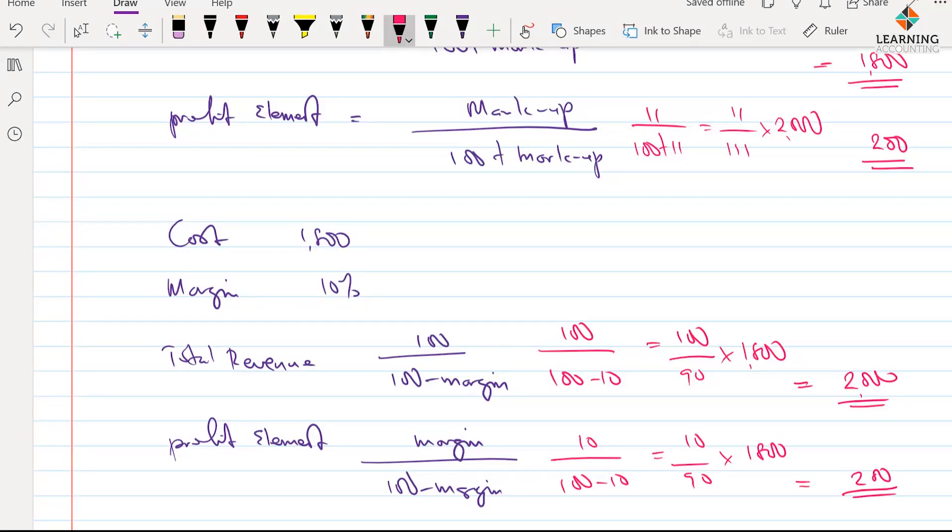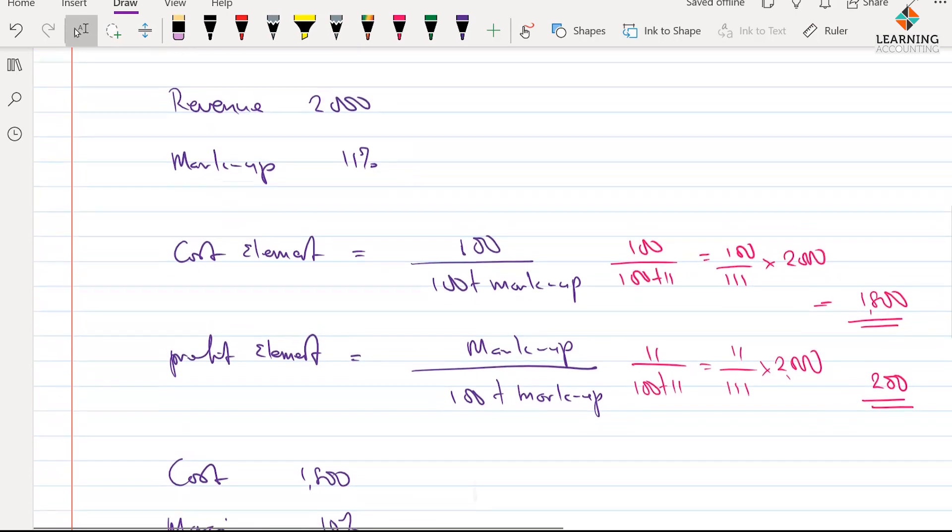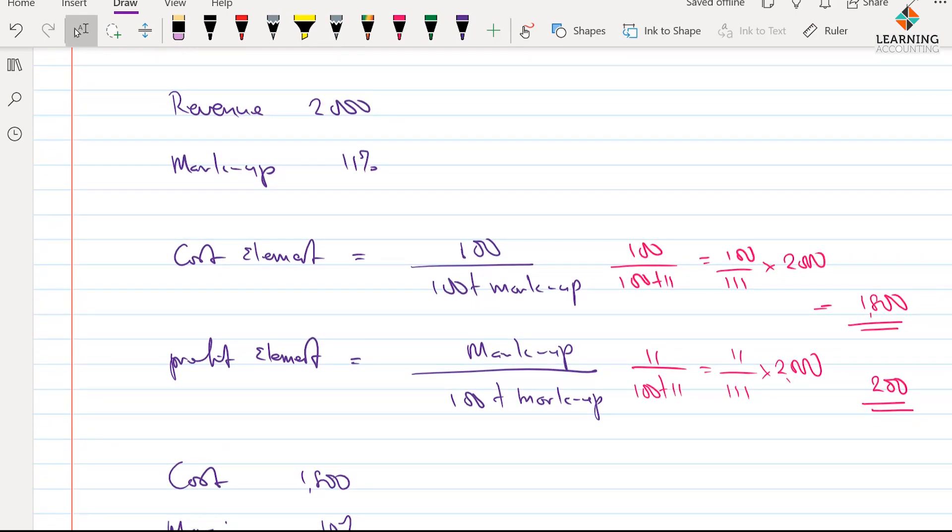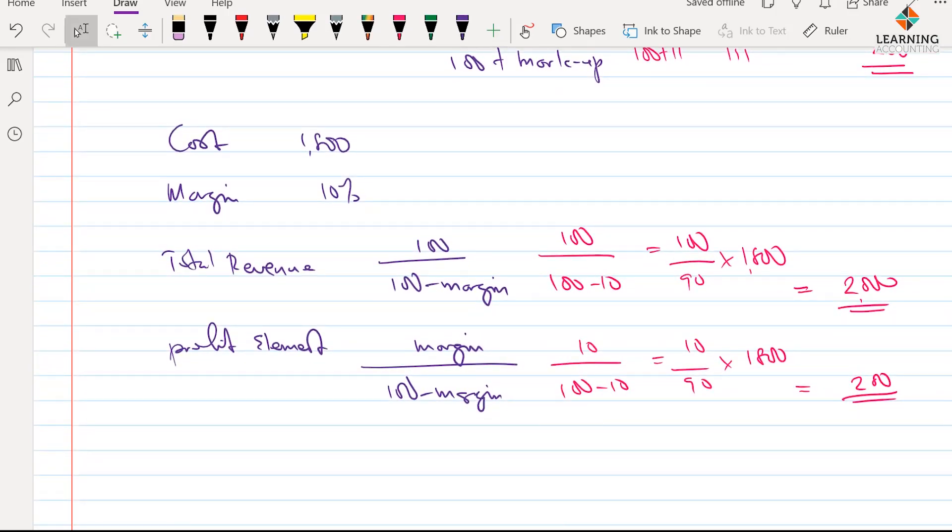So, when it comes to markup and margin, I hope this will help you understand them better. As for the revenue, we have information on revenue. We're looking for the cost. And, of course, 2,000 minus 1,800 will give us 200. While for the cost, we are looking for the revenue. So, we have this as well. And, 2,000 minus 1,800 will give us the profit element of 200.